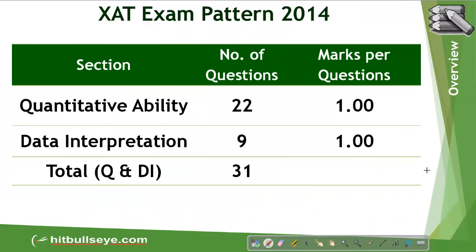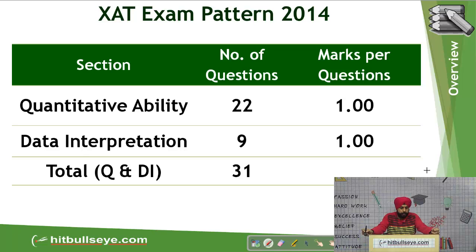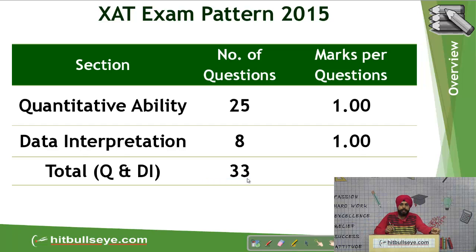Before we start solving a few of the previous year's questions, let's have a look at what have been the pattern of the XAT exam in the last 2 years. In XAT 2014, there were a total of 31 questions in this section. Out of that, 22 questions were on quantitative ability and there were 9 questions on data interpretation. Similarly, if you move for 2015, there were a total of 33 questions. Out of that, 25 questions were on quantitative ability, whereas there were 8 questions on data interpretation.